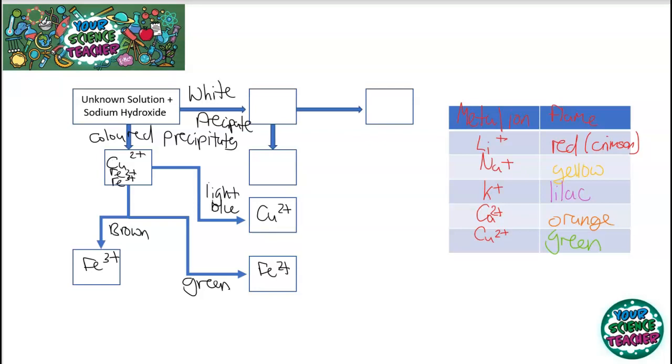With the white precipitates, you know that it could be either aluminium, magnesium, or calcium. Then what you do to distinguish whether it is aluminium, magnesium, or calcium is you add excess sodium hydroxide. And if it dissolves, then you know that it's aluminium. And if it doesn't, then you know that it's going to be calcium or magnesium.